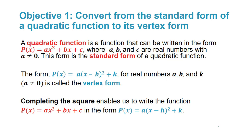We define a quadratic function to be a function that can be written in the form p of x, which is equal to ax squared plus bx plus c, where a, b, and c are real numbers with a not equal to 0. This form is called the standard form of a quadratic function. You'll recall we talked about quadratic equations back in section 3: ax squared plus bx plus c equals 0, so hopefully this seems familiar.